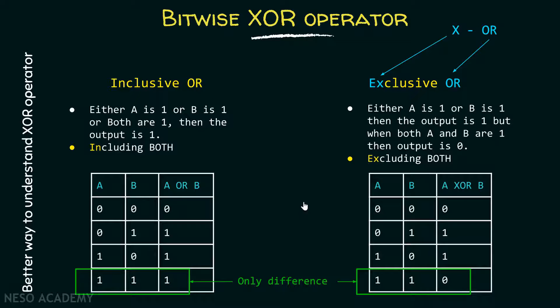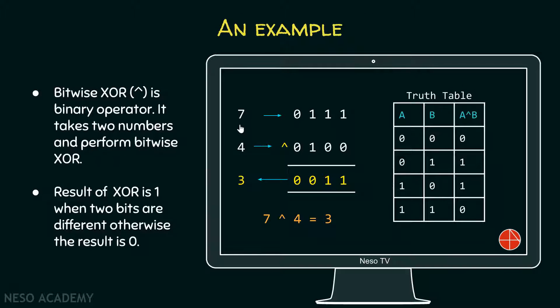Now let's consider one example to better understand the concept of bitwise XOR operator. Here in this example, we have two values seven and four and their four bits binary representations. When we are having both bits as one, then the output would be zero or when both bits are zero, then also the output is zero. Otherwise, the output is simply one.